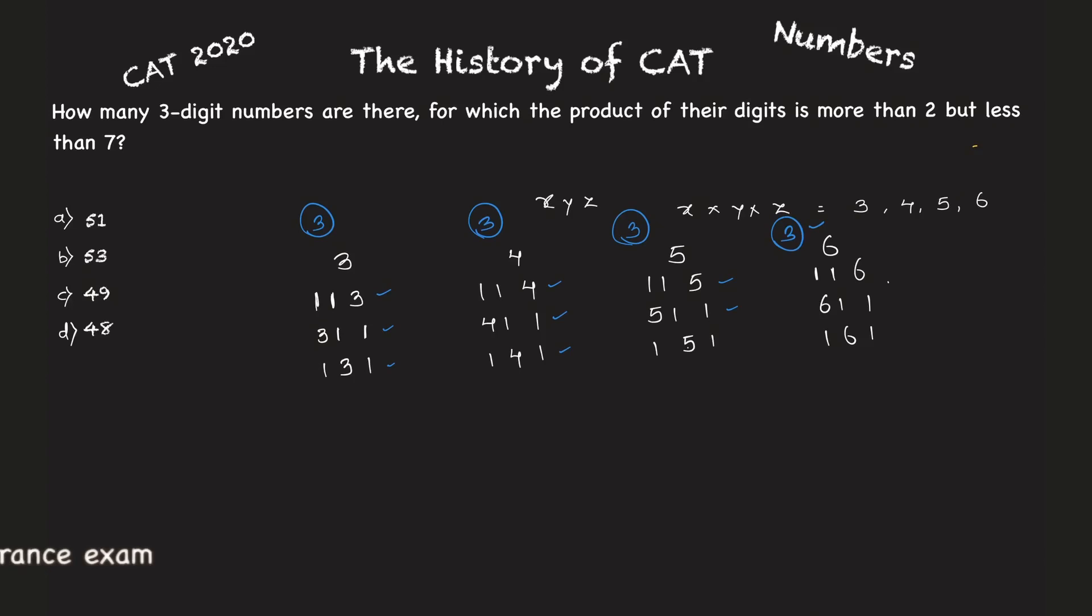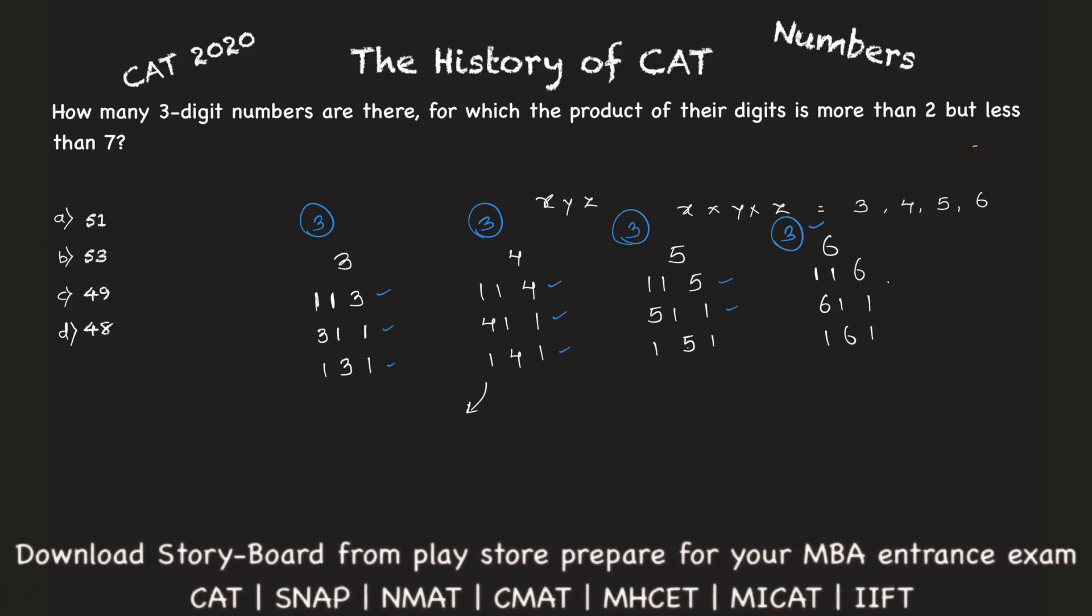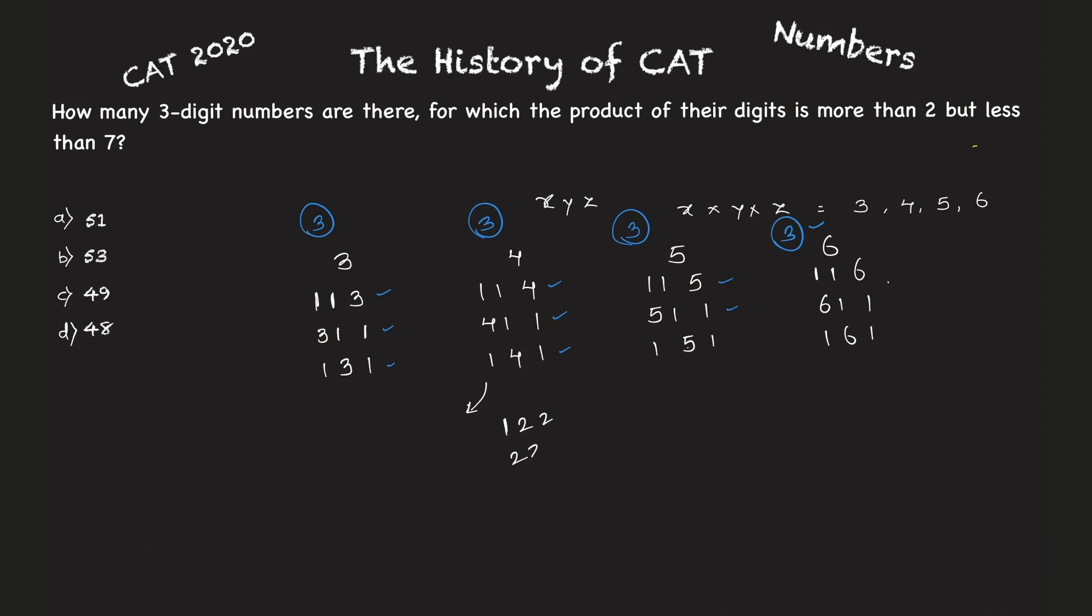With four, I can write it as two times two is also four, right? So I can take the number as one two two. Similarly I can form two two one and two one two. These three are also numbers, so three more numbers I can form whose product is four.